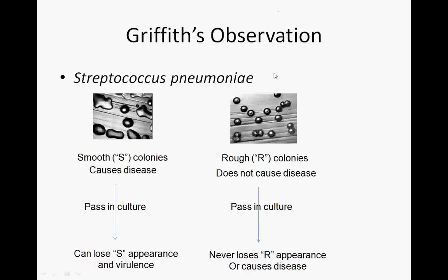The very first example in publication where somebody recognized what DNA could do involved Griffith's experiment. He was studying the bacterial organism Streptococcus pneumoniae — a respiratory pathogen of humans. He observed two different types of colonies: smooth colonies with gooey stuff on the surface, called S colonies, and rough ones without it, called R colonies.